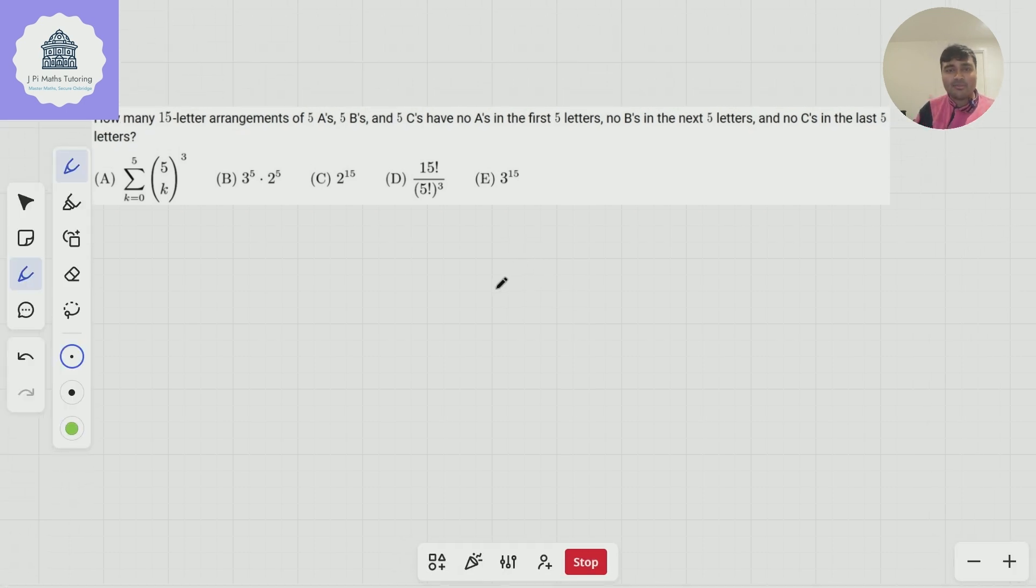Let's have a look at this problem. We want to know how many 15-letter arrangements of 5 As, 5 Bs, and 5 Cs have no As in the first five letters, no Bs in the next five letters, and no Cs in the last five letters. A really nice combinatorics problem.